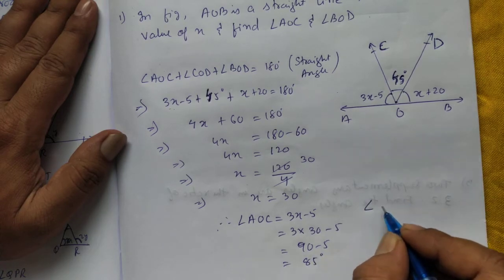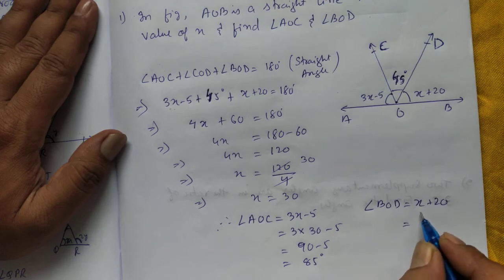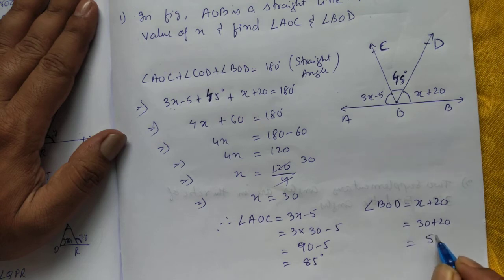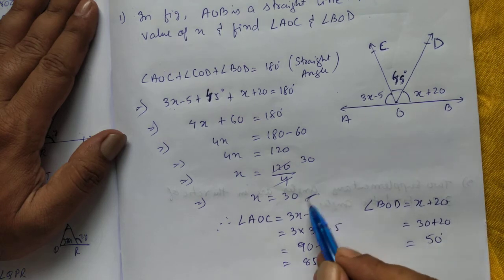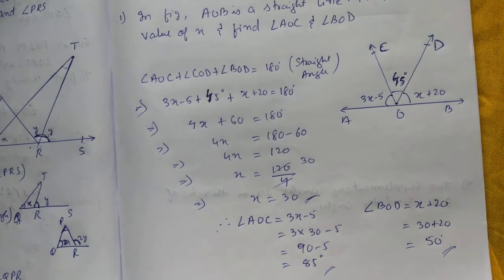Now we are going to find angle BOD, that is X plus 20. X we got 30 plus 20 is 50 degrees. So we got X, angle AOC and BOD also. Pause the video to write the solution, we will go to next extra question.